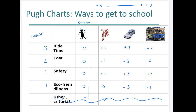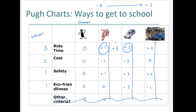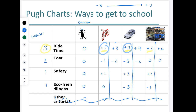Applying the weights: for the bike, the plus one ride time score multiplied by weight three gives plus three. For the car, plus three multiplied by three gives plus nine. The trolley's ride time becomes plus six. The same process applies to cost — negative one becomes negative two for bike, negative three becomes negative six for car, and zero stays zero for the trolley. Safety scores don't change since they're weighted as one.